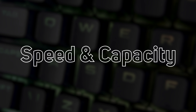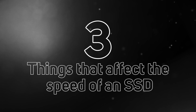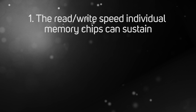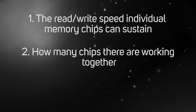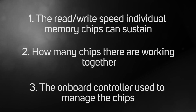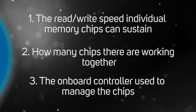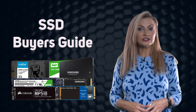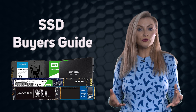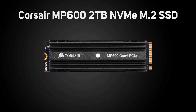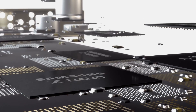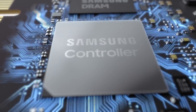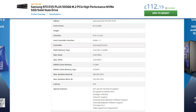Speed and capacity can be linked. There are three things that affect the speed of an SSD: number one, the read/write speed the individual memory chips can sustain; number two, how many of those chips are working together; and number three, the controller used to manage them. Different brands have different SSD controllers which determine the overall performance for a given task. In the past most brands used a third-party controller like Phison, but in recent years many brands have designed their own custom controllers.